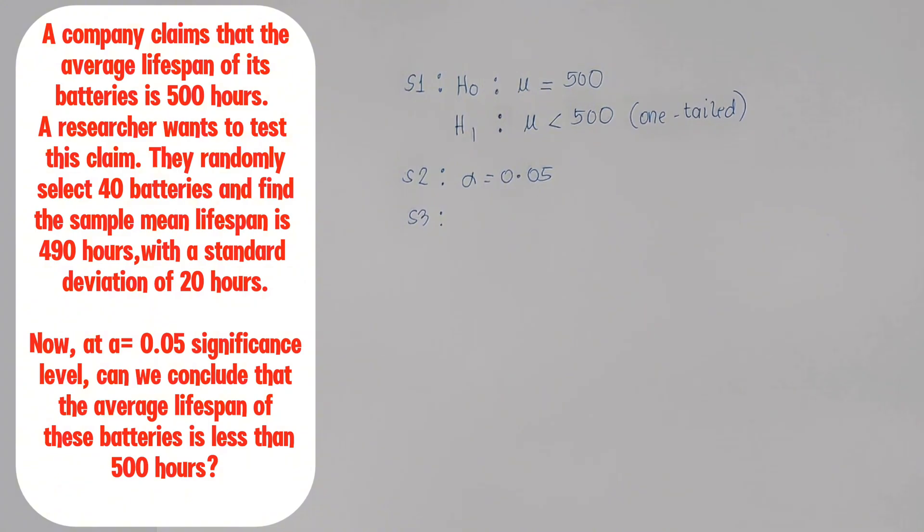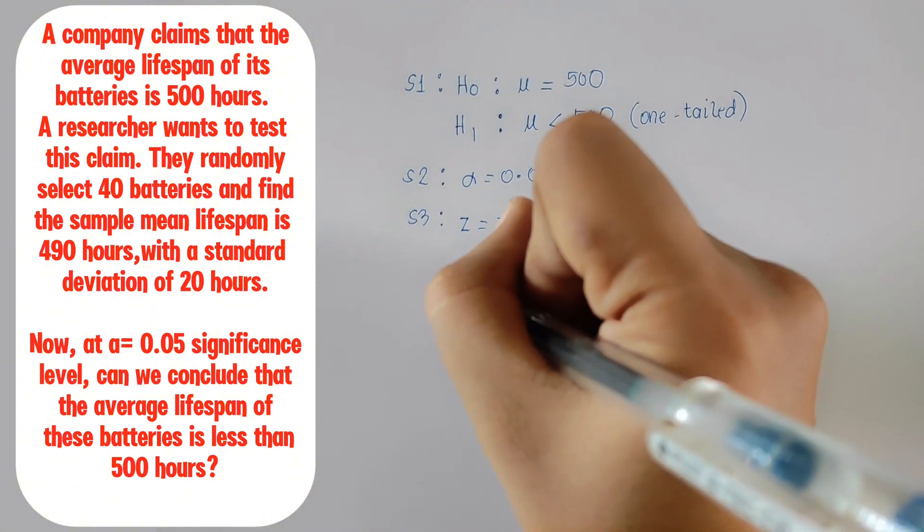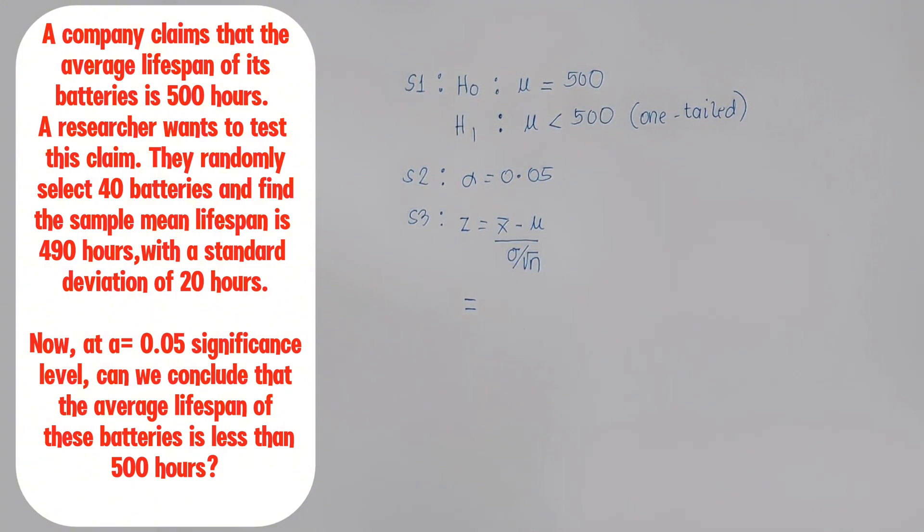Next, we calculate the test statistic using this formula. Z equals sample mean minus population mean all over population standard deviation over the square root of the sample size.